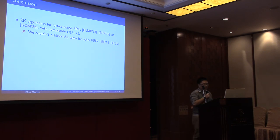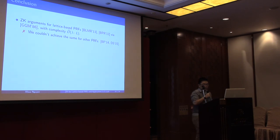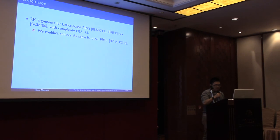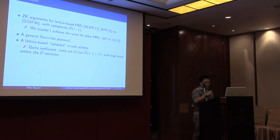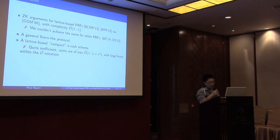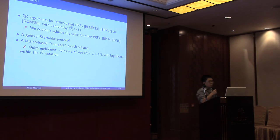In conclusion, we obtain zero-knowledge arguments for two lattice-based PRFs with complexity linear in λ and linear in L, though we could not achieve the same for other PRFs due to their complicated structure — this remains an open problem. We also obtain a general Stern-like protocol that may be of independent interest, and we present the first compact e-cash system from lattices. However, it is quite inefficient because the coin size is on the order of λ·L + λ^2, with also a large hidden constant factor. Designing a more efficient e-cash system from lattices remains an interesting open problem. Thank you for your attention.